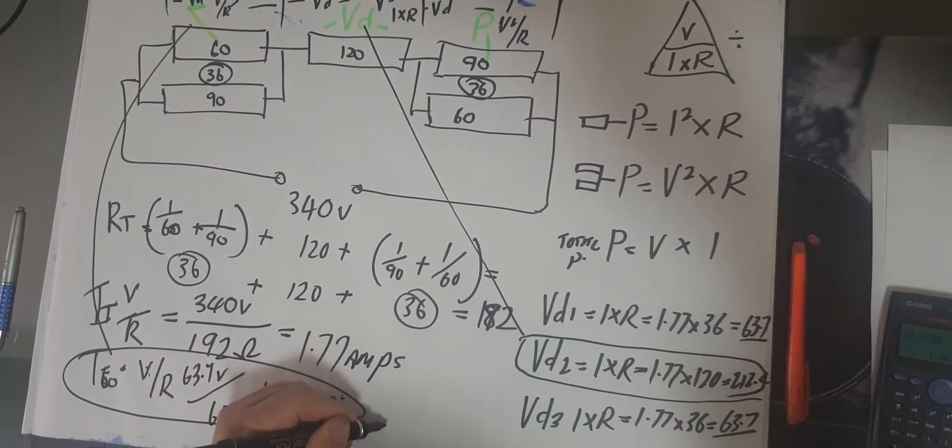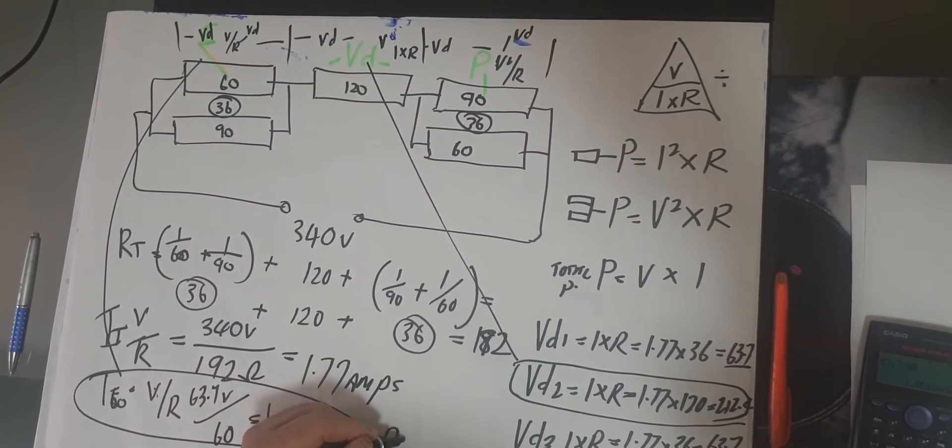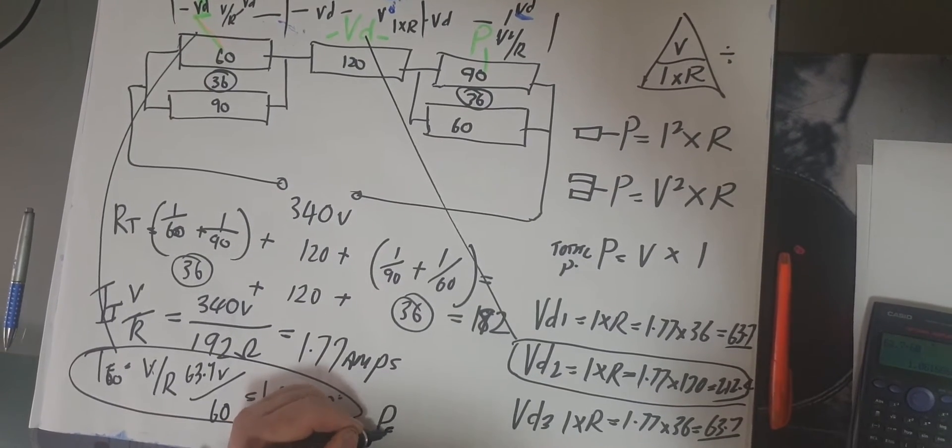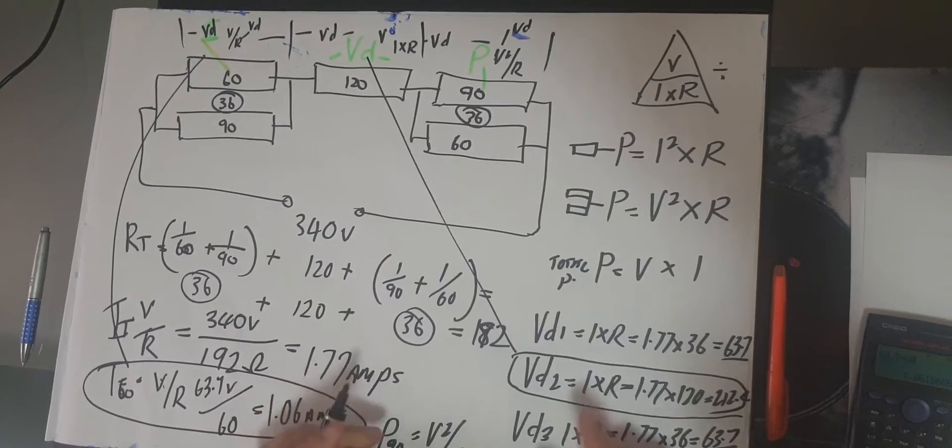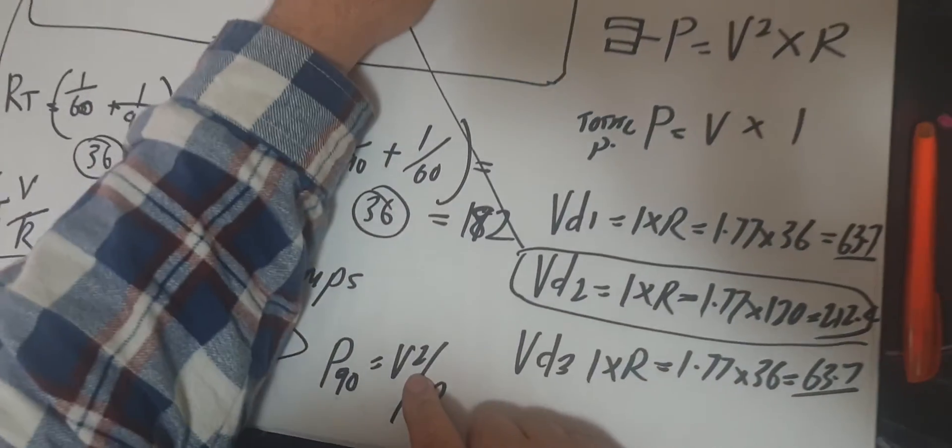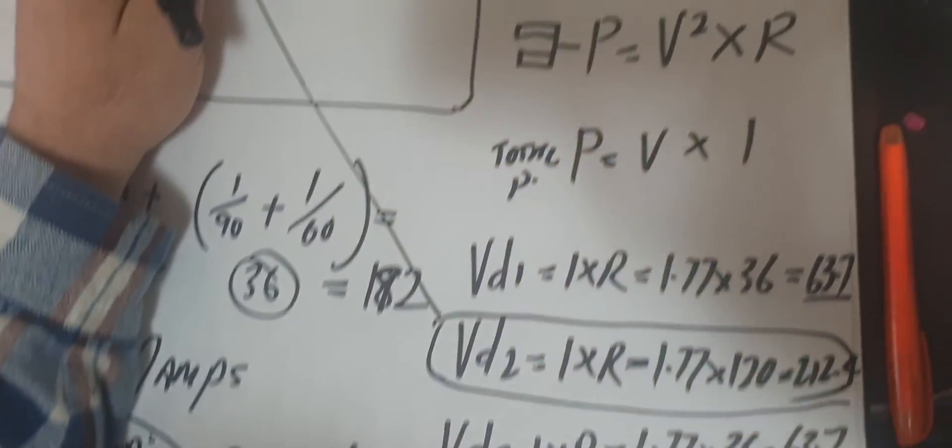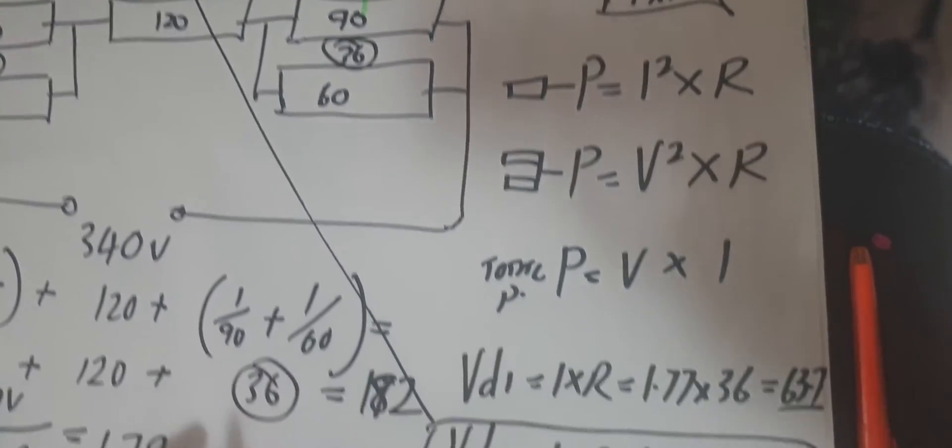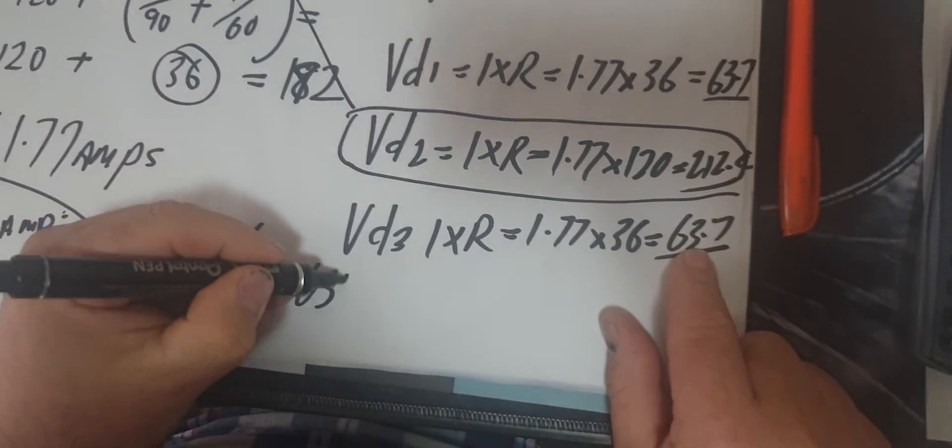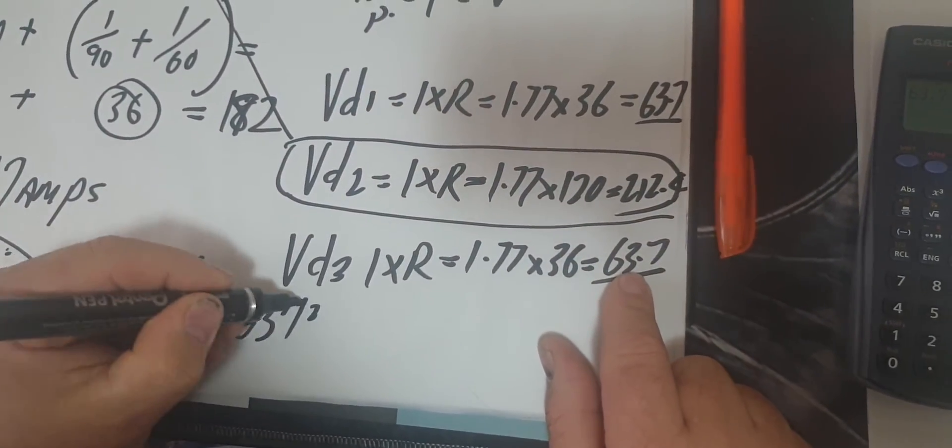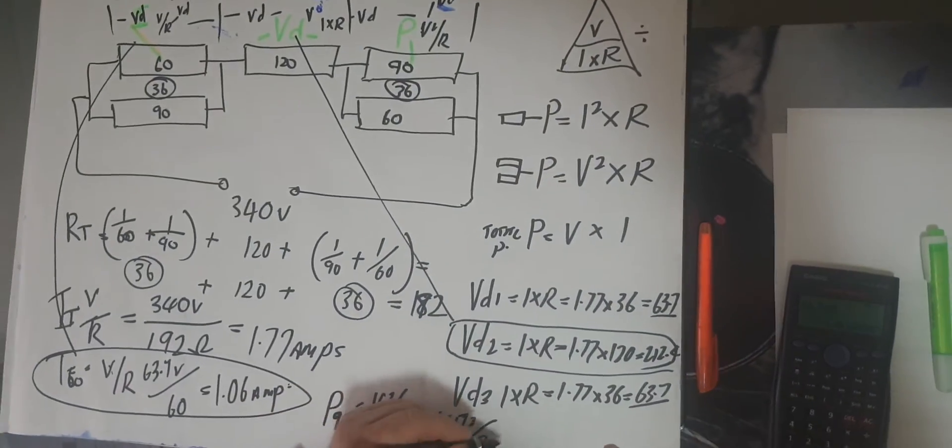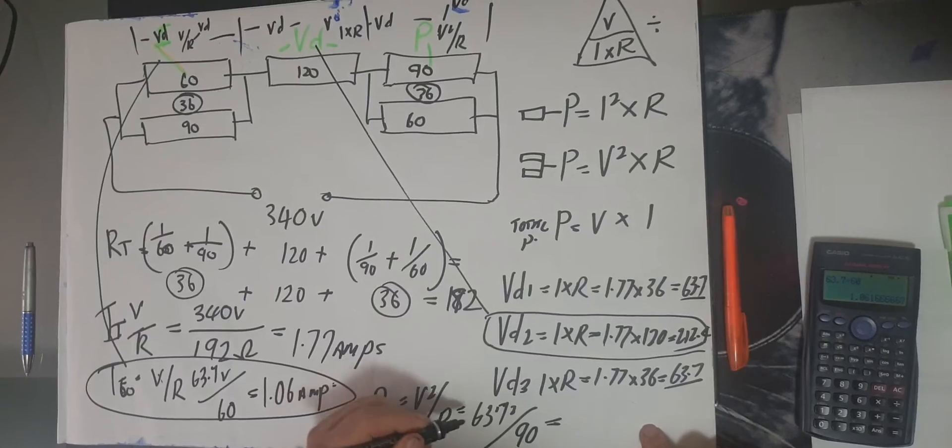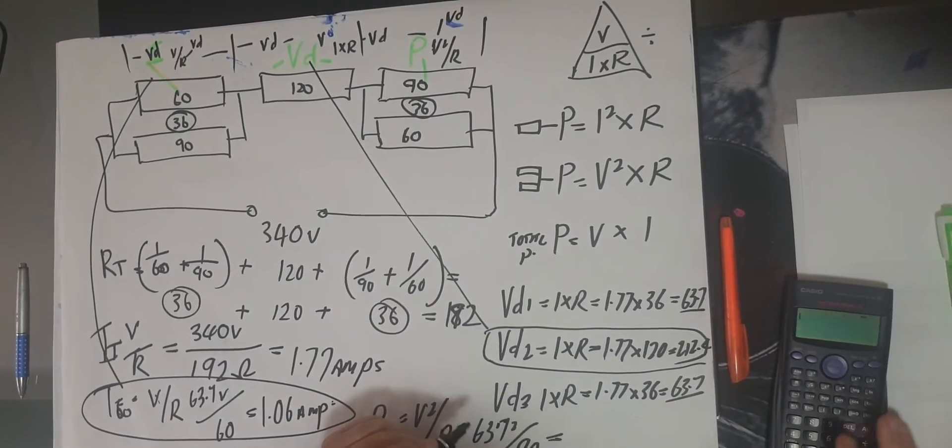Now we've just got to find the power for the third. So power for the 90 - that's going to equal V squared over R. We did that because we knew it was a parallel path. We have the voltage drop which is here, so 63.7 squared divided by the resistance which is 90. So let's go to the calculator.